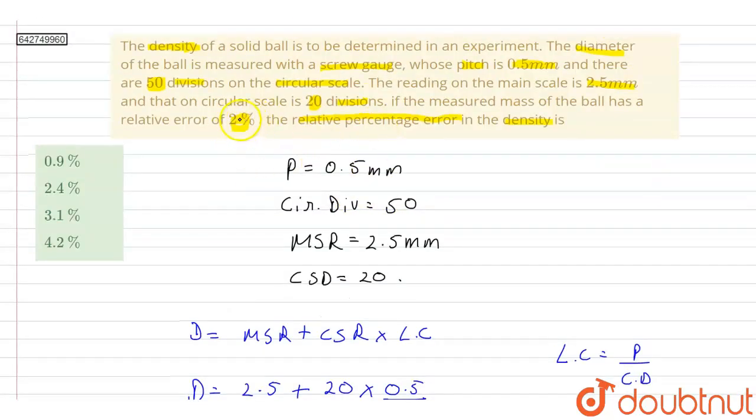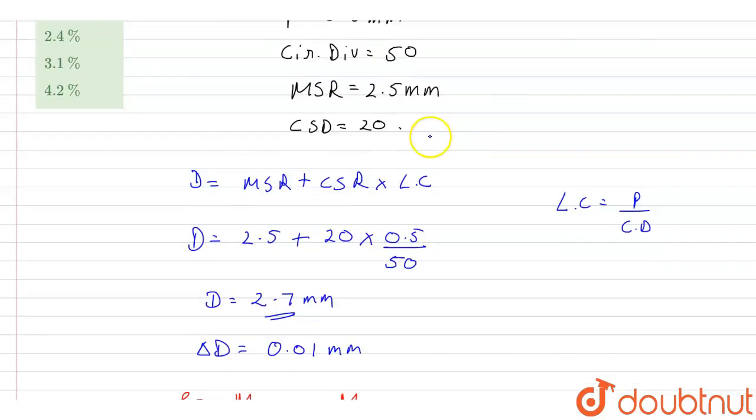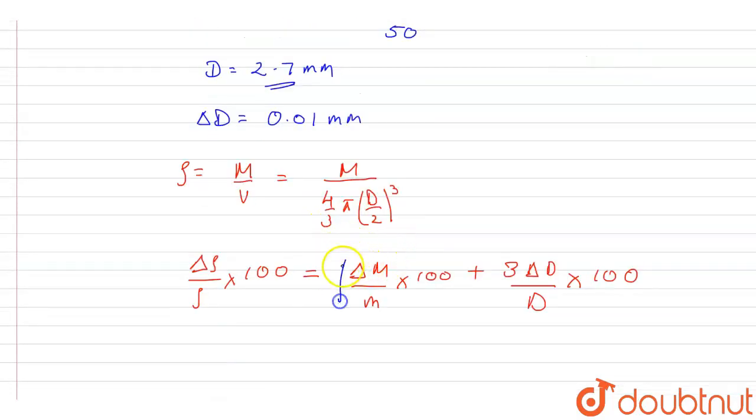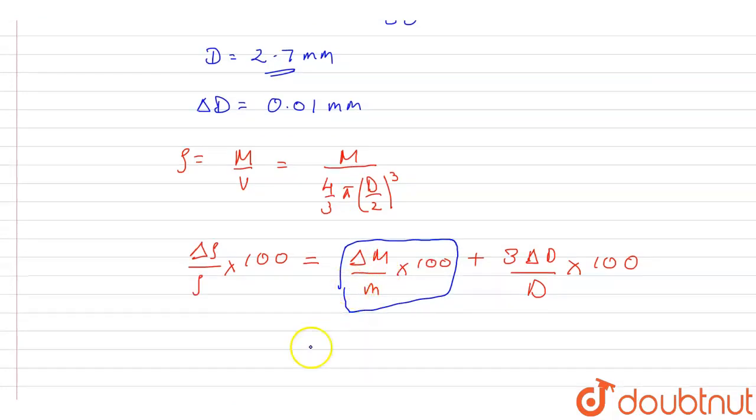So this will be the percentage relative error for the measured mass of the ball. This means that this value delta m upon m, the relative percentage error of the mass, will be equal to 2, plus 3 times delta d that is 0.01 divided by d that is 2.7, multiplied by 100.